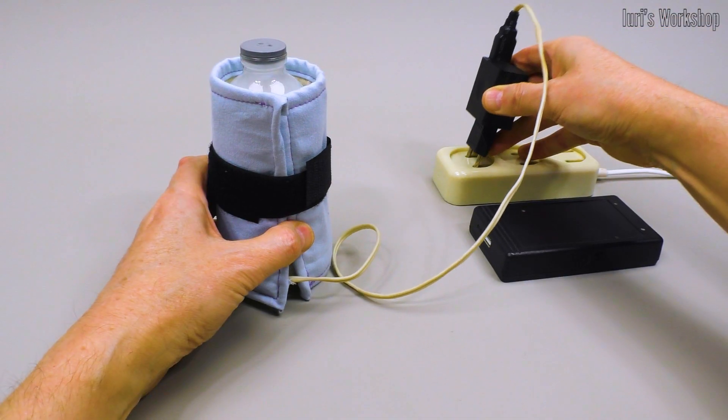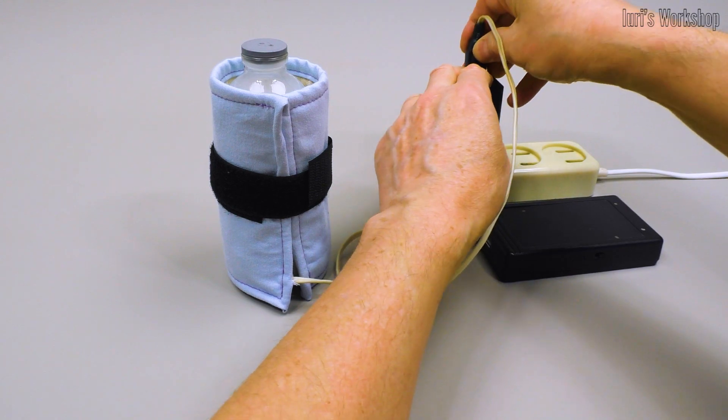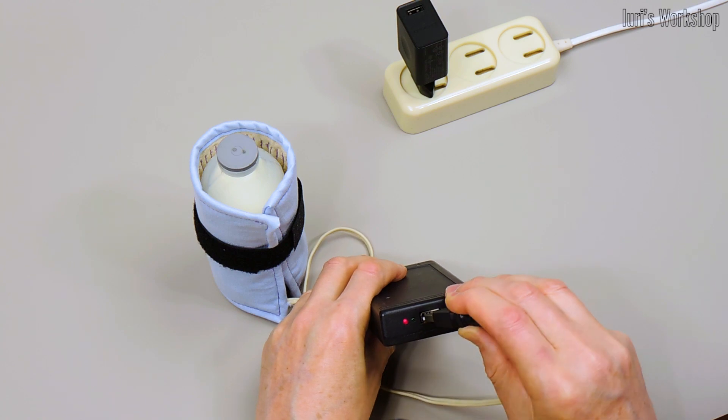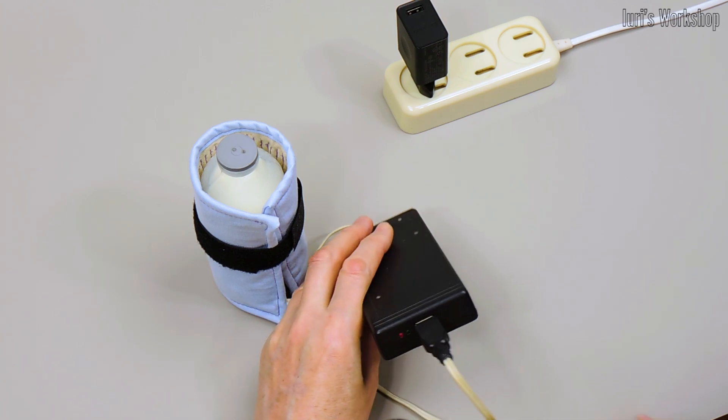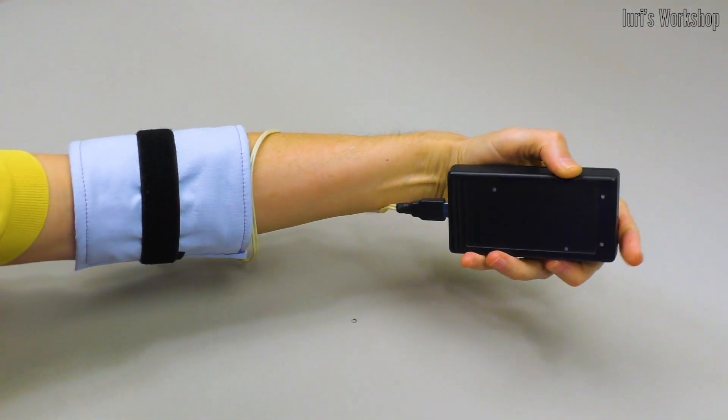But to heat coffee, you need a 10 to 12 volt source and an adapter. Outside the home, this heating pad can be connected to a mobile power bank. And finally, the heating pad can be used for its intended purpose by attaching it to the sore spot.